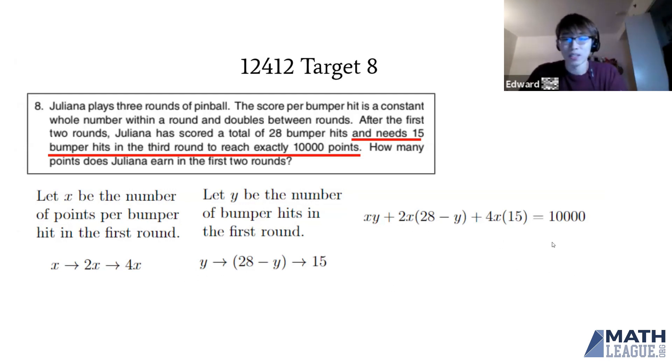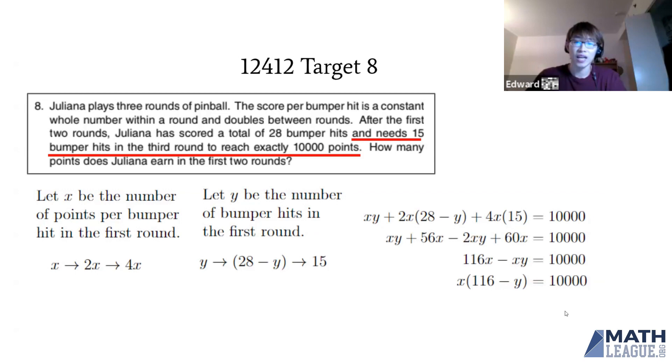We can distribute, combine like terms, and factor out X. Since X is a whole number and Y is the number of bumper hits, also a whole number, both X and 116 minus Y are factors of 10,000.